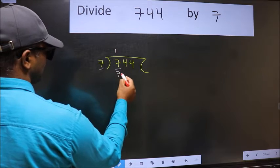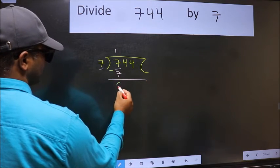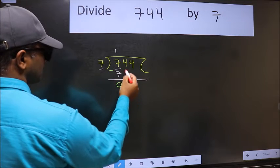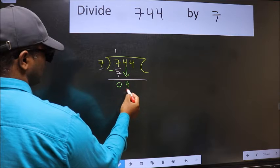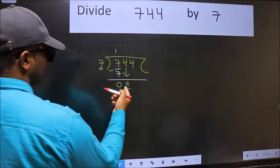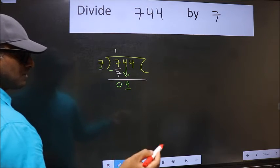7 ones is 7. Now we should subtract, we get zero. After this, bring down the beside number, so 4 down. Now here we have 4 and here 7. 4 is smaller than 7, so we should bring down the second number.